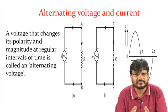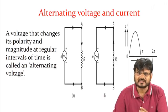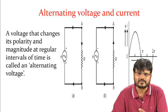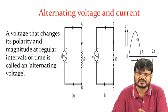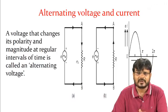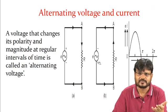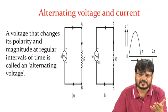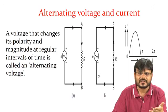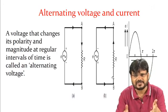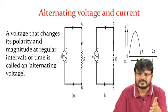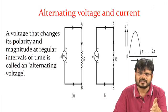A voltage that changes its polarity and magnitude at regular intervals of time is called an alternating voltage. In the positive cycle, current flows from A to B when polarity is minus to plus (0 to π). In the negative half cycle, the polarity reverses, and current flows from B to A. The waveform shows positive voltage from 0 to π, and negative voltage from π to 2π.